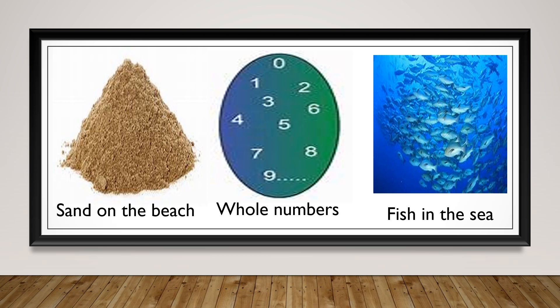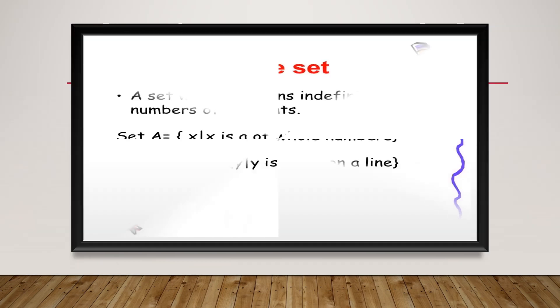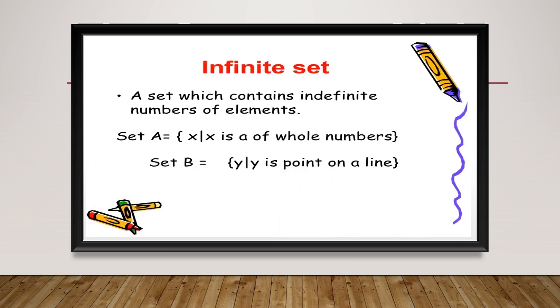Here are two more examples. We have sand on a beach — the grains of sand go on and on, and there is no way we are able to count all the grains of sand on a beach, or the fish in the sea. The number goes on and on, so we call these infinite sets where we are unable to count the members.